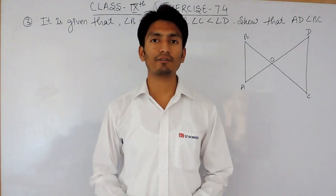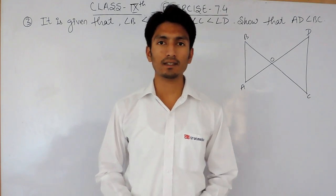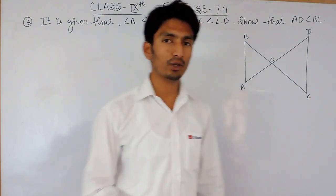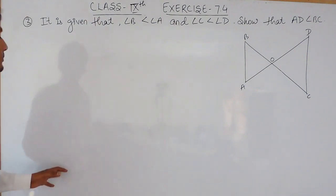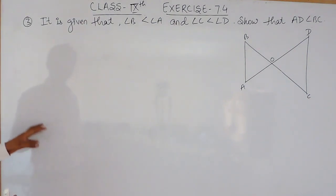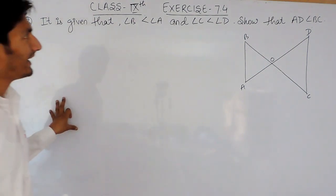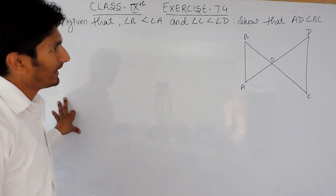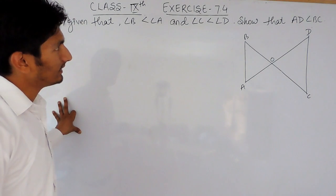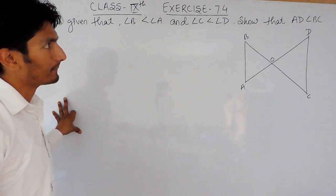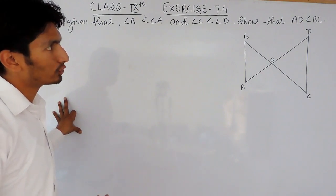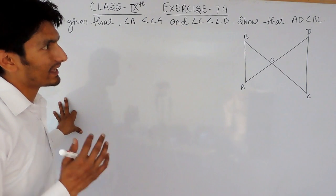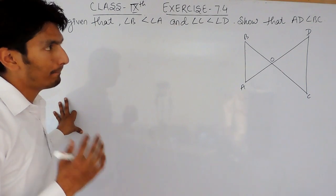Hello everyone, we are from True Maths and in this video we are going to solve question number 3 of exercise 7.4. The question says it is given that angle B is less than angle A and angle C is less than angle D, and you have to show that AD is less than side BC.